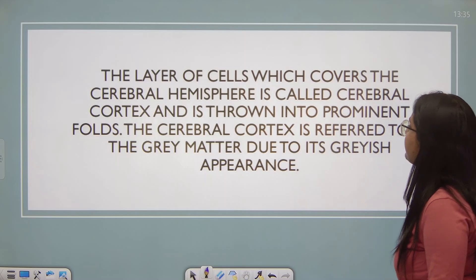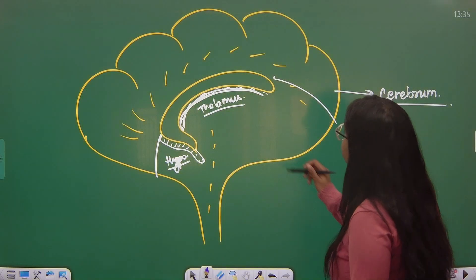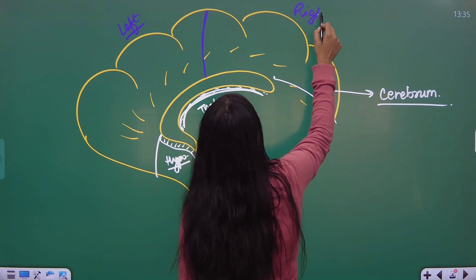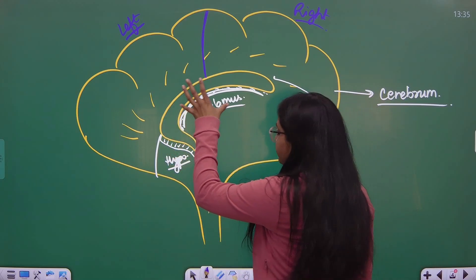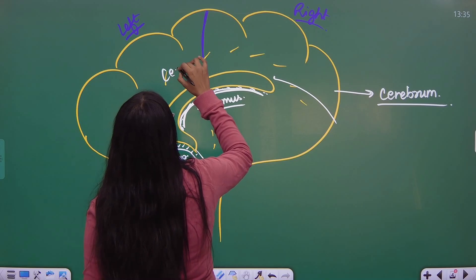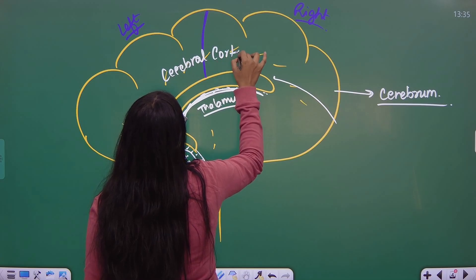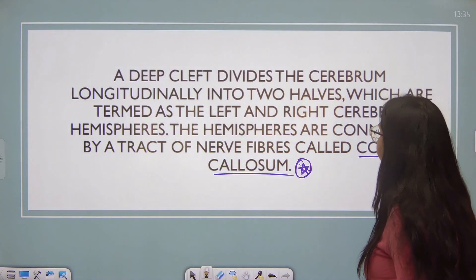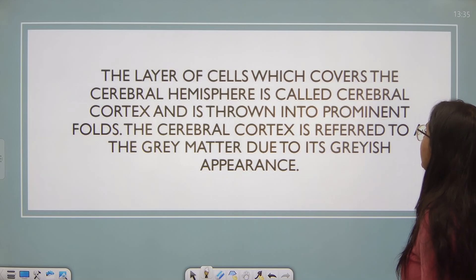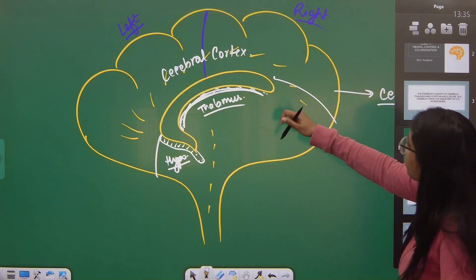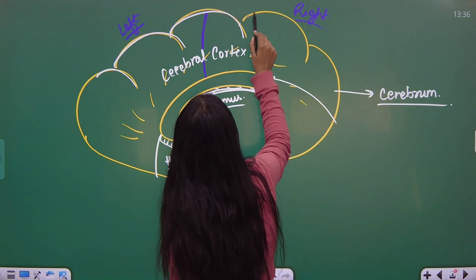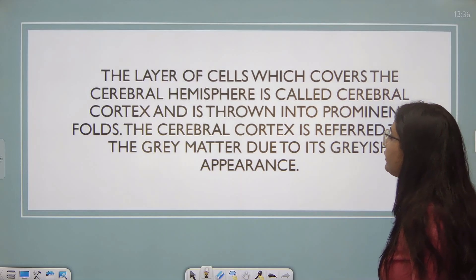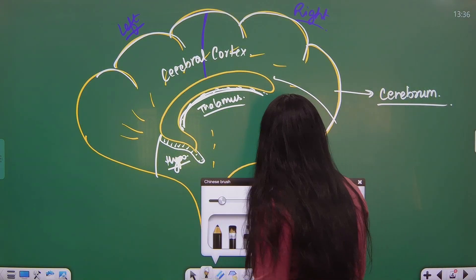The layer of cells which covers the cerebral hemisphere is called the cerebral cortex. The cerebral cortex is thrown into prominent folds, which you can see as the hemispheres. The cerebral cortex is referred to as gray matter due to its grayish appearance.